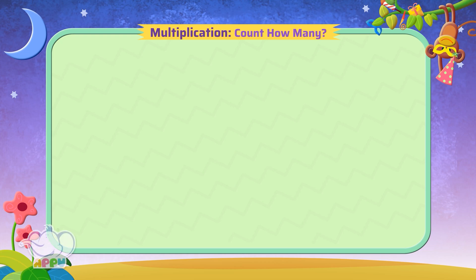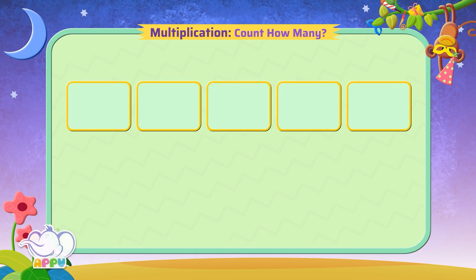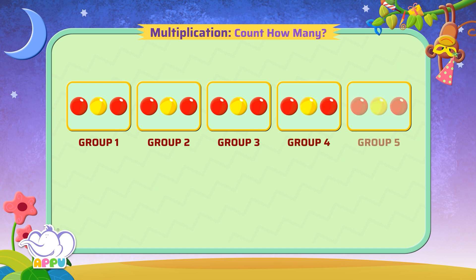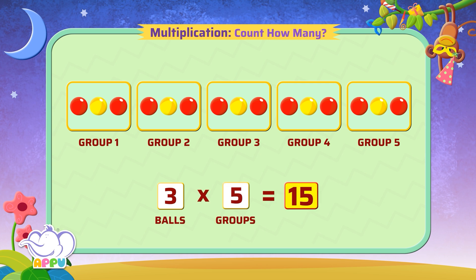Count how many. How many balls are there all together? We see three balls in each group, and there are five groups. So three times five equals fifteen. There are fifteen balls all together. Exactly right!